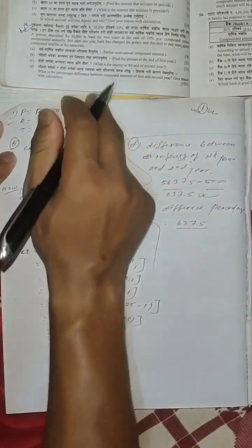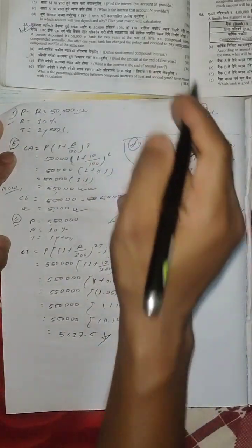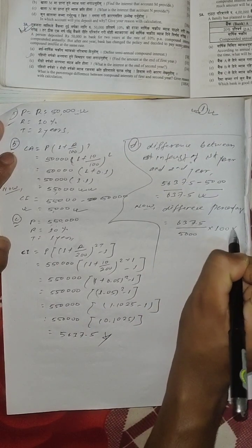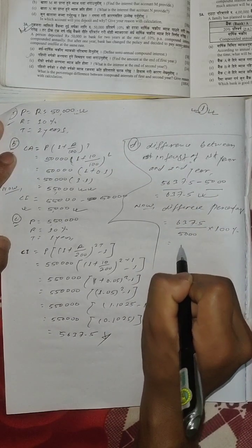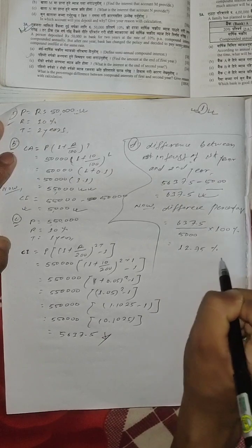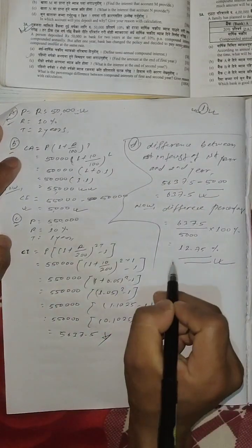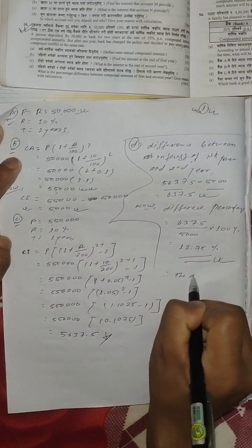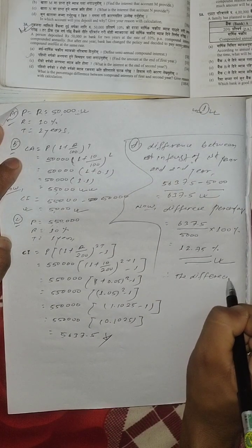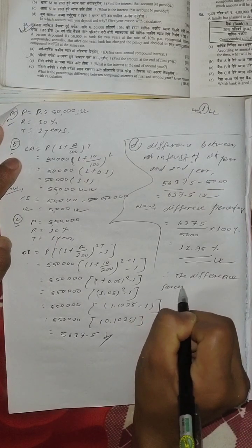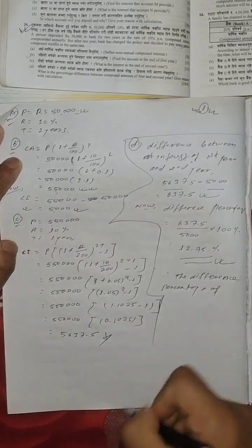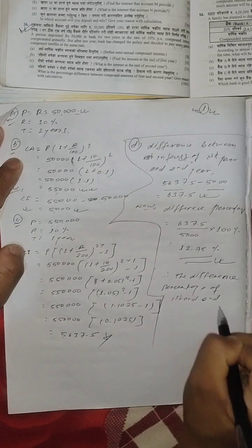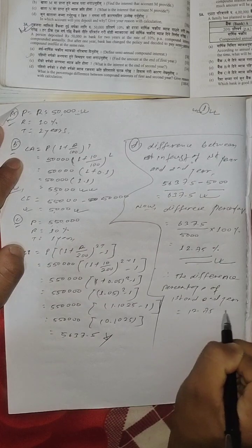This is the first year. If you are in first year, you will have to calculate the amount. If you are in second year, you will have to calculate the amount. The second year is the amount, and the percentage will be multiplied by 100. The value calculation gives 0.75% — if you say it, the difference percent is equal to 12.75%. The difference percentage of first and second year is equal to 12.75%.